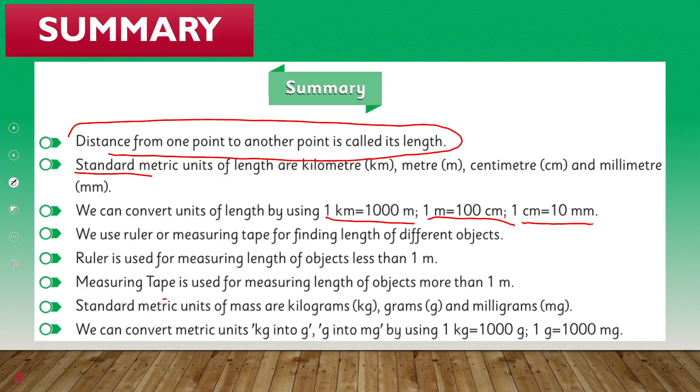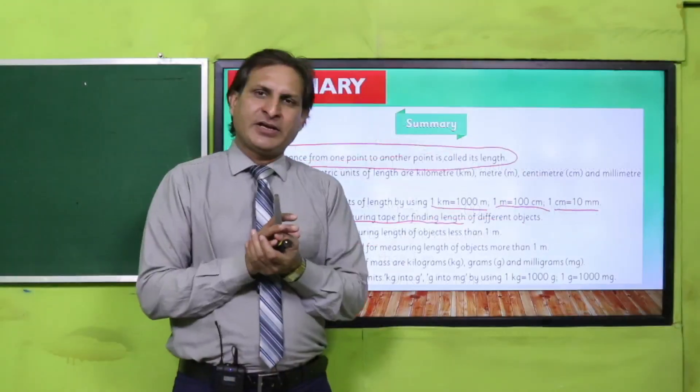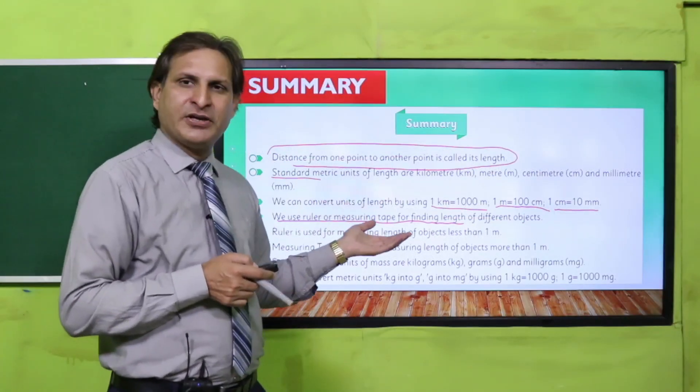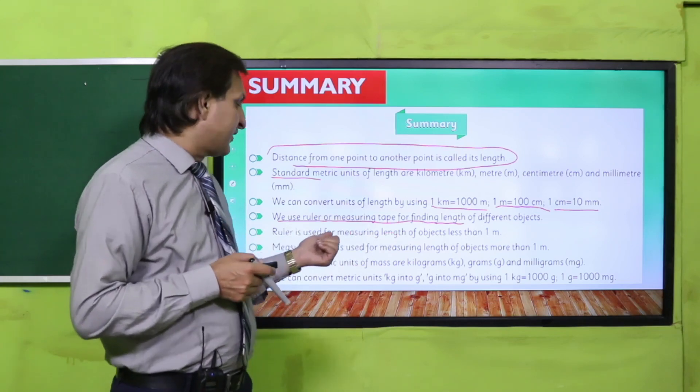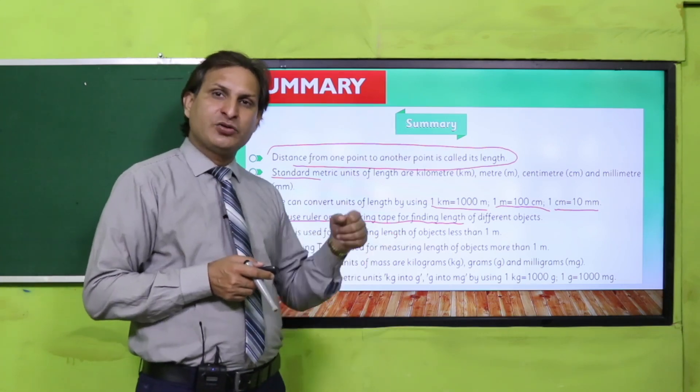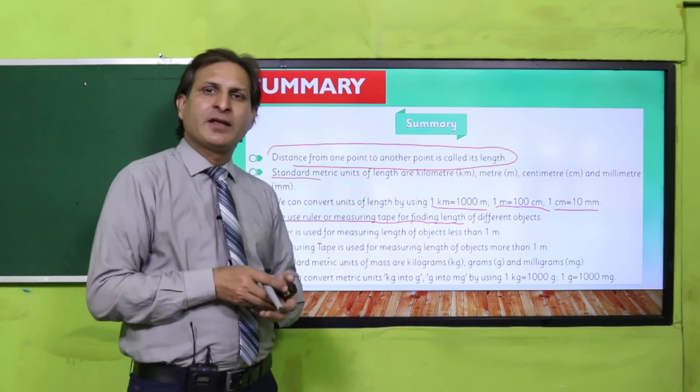Similarly, we can use ruler or measuring tape to find length of different objects. To measure the length of different objects, we use measuring tape and ruler. These are the basic key concepts that we have included in this summary.